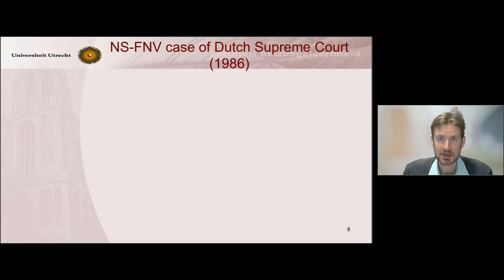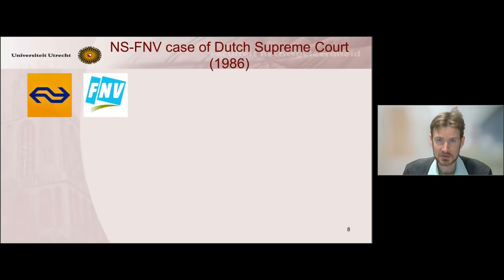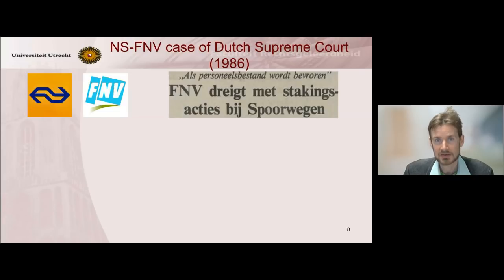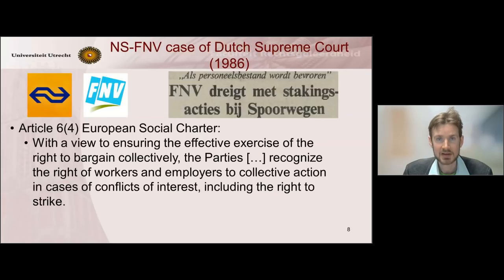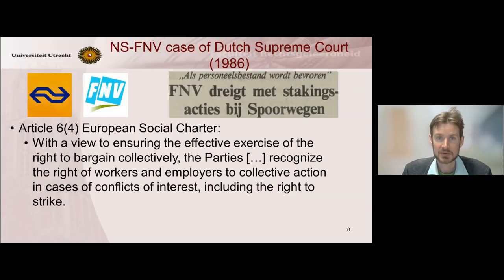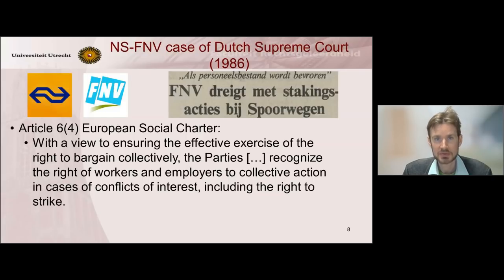The first case is a case between the National Railways and the Trade Union Confederation, and this was basically about the right to strike. The unions had motivated their workers to go on strike and the National Railways wanted the judge to prohibit the unions from doing so. But the Trade Union Confederation relied on Article 6, paragraph 4 of the European Social Charter, which included, in their view, a right to strike. And so they directly applied this provision before the Dutch courts. The question was: can you directly invoke this provision before the Dutch courts?